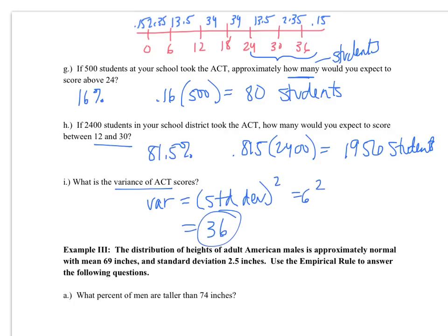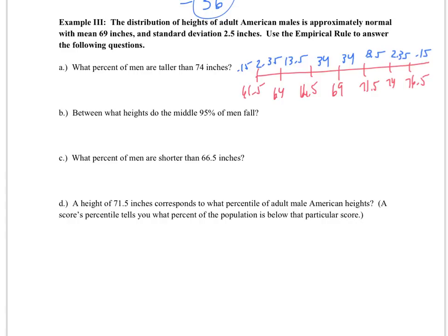Pause the video and make your bell curve for example 3. After you've checked your bell curve, then try answering the problem set below. As you can see, I made my curve using the mean of 69, that's going to be my middle number, and then my standard deviation 2.5 tells me my scale for the axes. I then filled in my percentages and now I am ready to go.